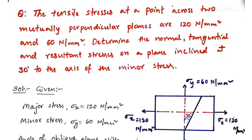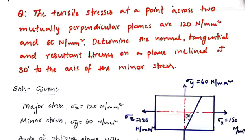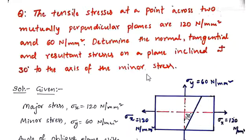Now we are seeing a problem from the topic principal stresses and strains. The tensile stresses at a point across two mutually perpendicular planes are 120 N per mm² and 60 N per mm². Determine the normal, tangential, and resultant stresses on a plane inclined at 30 degrees to the axis of the minor stress.